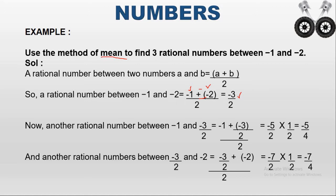The denominator is two, so the average of the two integers is minus three by two. Next, you have to find another rational number. You have to choose the first number, minus one, with the average minus three by two. So now: minus one plus minus three by two, whole divided by two. Here two and minus one are multiplied, giving minus two.